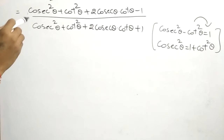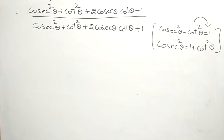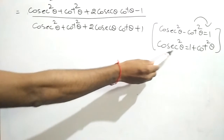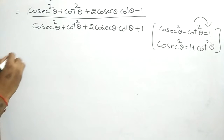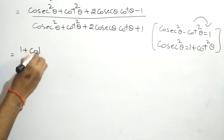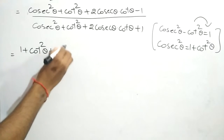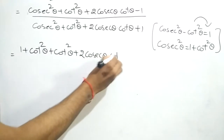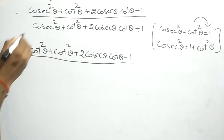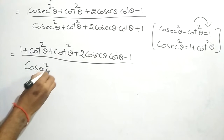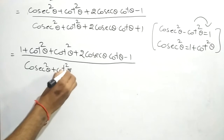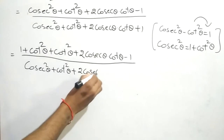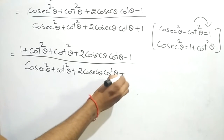The previous step gives us: cosec²θ + cot²θ + 2cosecθ·cotθ - 1, divided by cosec²θ + cot²θ + 2cosecθ·cotθ + 1. Now in the numerator, in place of cosec²θ we are writing 1 + cot²θ. So we have: 1 + cot²θ + cot²θ + 2cosecθ·cotθ - 1, with the denominator written as it is.